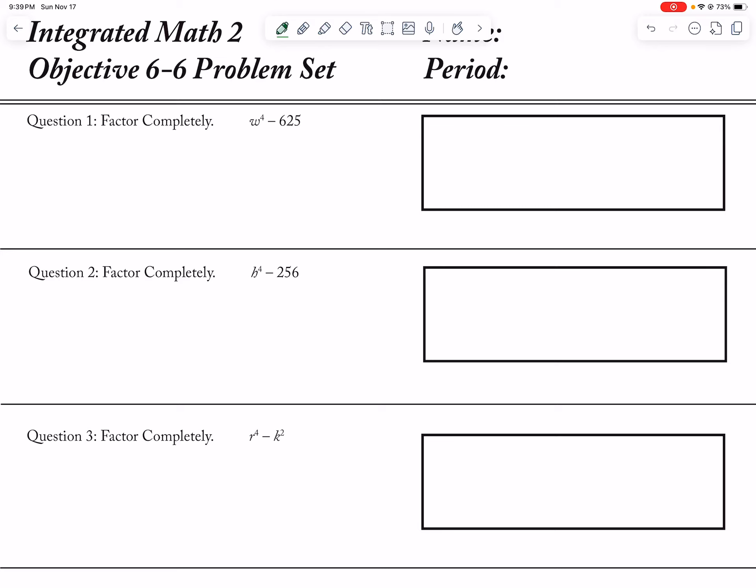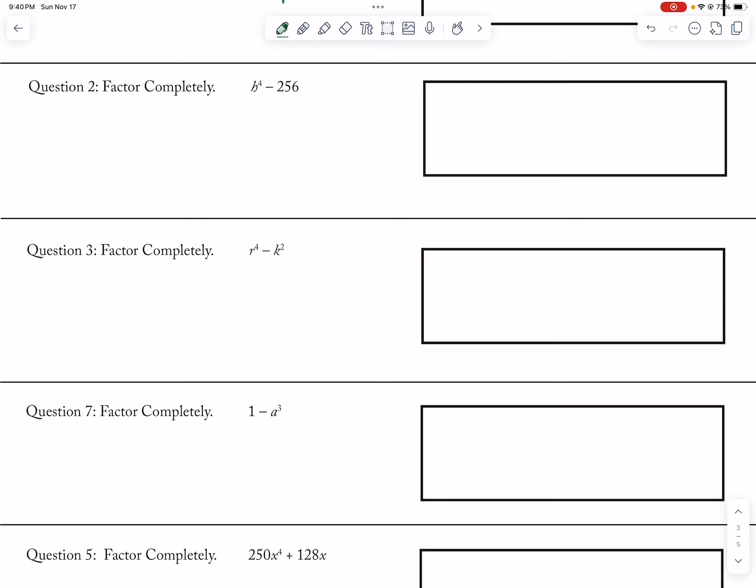Alright, so w squared minus 25 and w squared plus 25. This factors to difference of squares, so that's w minus 5, w plus 5, and then w squared plus 25. And then r squared minus k, r squared plus k.